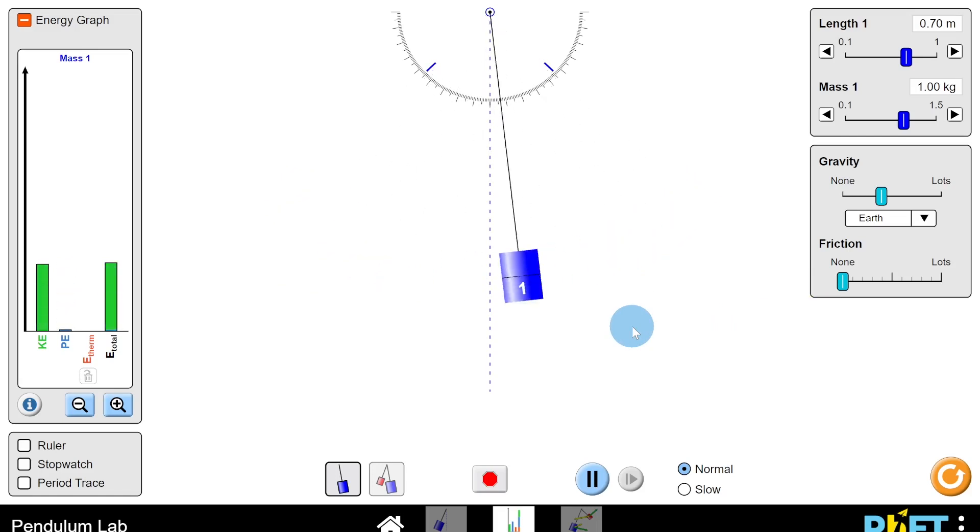However, what we're interested in here is the conversion between the types of energy. We just said in the notes that the kinetic energy of the object undergoing SHM will convert into potential energy and then back into kinetic energy and so on. And you can see that if you look at the energy chart on the left here. You can see the kinetic energy and the potential energy are changing as the object moves back and forth.